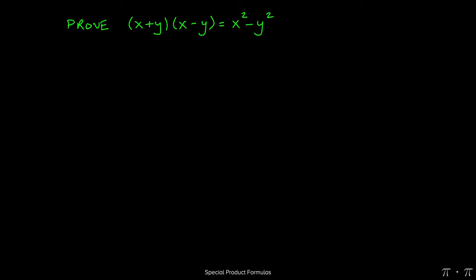Let's say we're asked to prove that the quantity x plus y times x minus y is equal to x squared minus y squared. We can start by recognizing that this is really just talking about a sum and a difference equals a difference of squares.